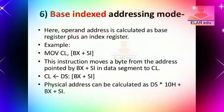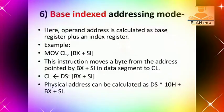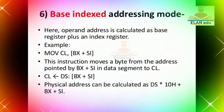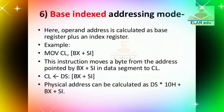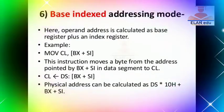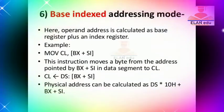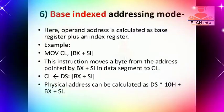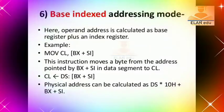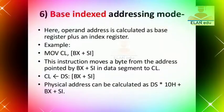In the based indexed addressing mode, we have both a base register and an index register. For example, MOV CL, [BX+SI] — here BX is the base register and SI is the source index register. The result is stored in the CL register.